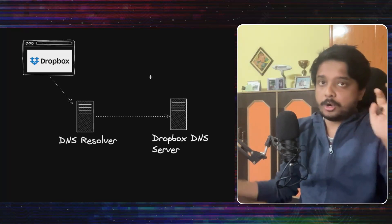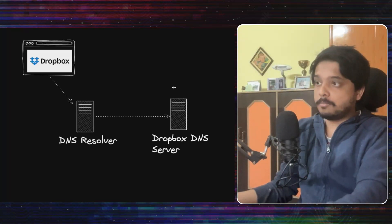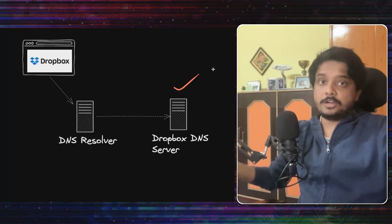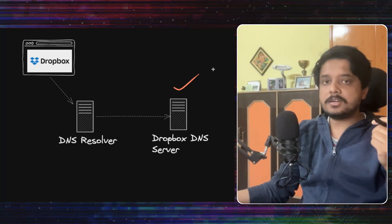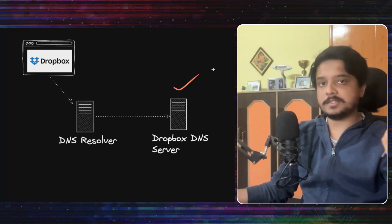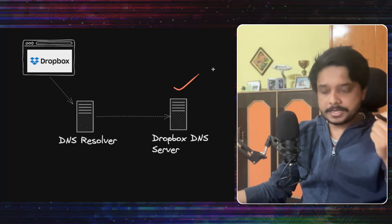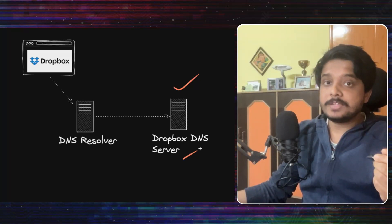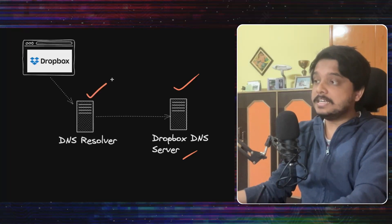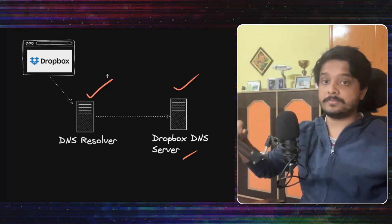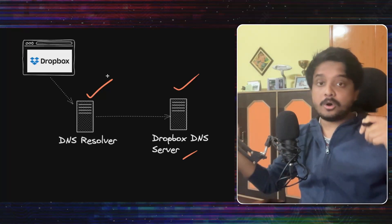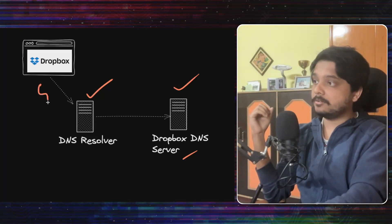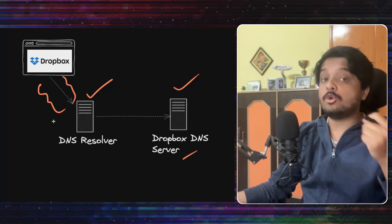When the client sends any request to dropbox.com, the DNS server which Dropbox controls has to tell it the IP of the point of presence to connect to. Dropbox knows which client needs to connect to which point of presence. But the DNS server that Dropbox controls does not directly get the IP of the client — instead, it gets the IP of the DNS resolver that the client is using. What they need to do is get a mapping of which client subnet is connected to which DNS resolver. How do they do that?